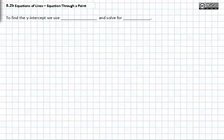In 8.2a, we discovered that the slope-intercept equation of a line is y equals mx plus b. In this video, we will learn how to use that to find the y-intercept and solve for b.